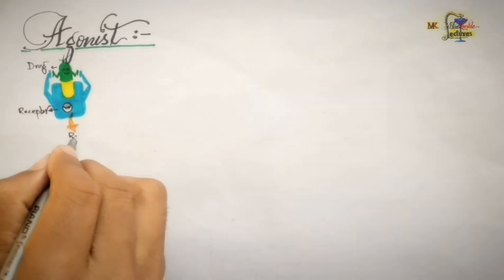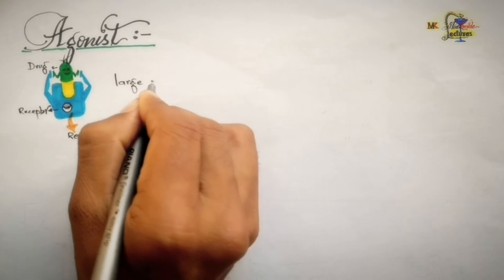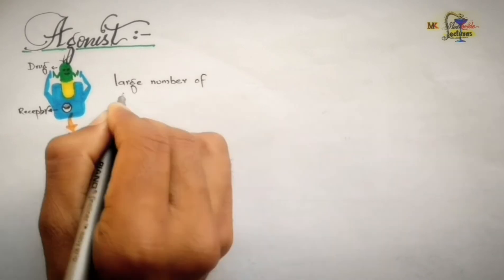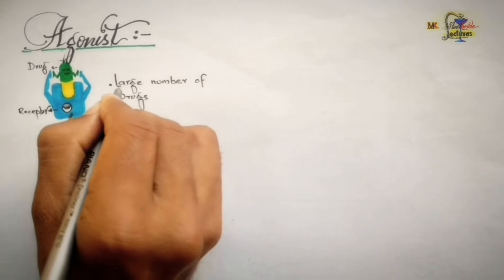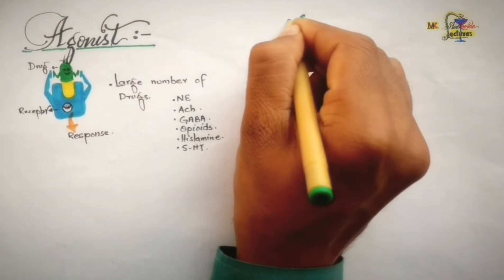Large number of chemical substances show effects by binding to receptors which may be endogenous substances or xenobiotics like norepinephrine, acetylcholine, GABA, histamine, opiates, and serotonin.